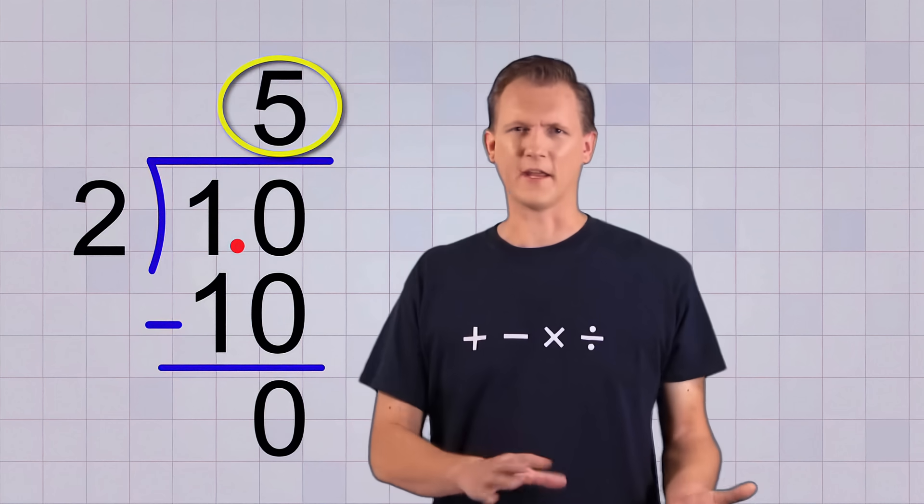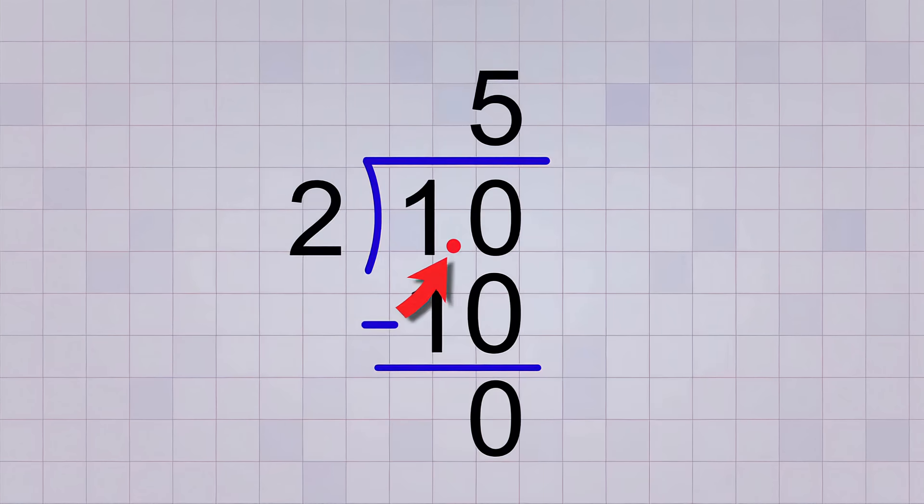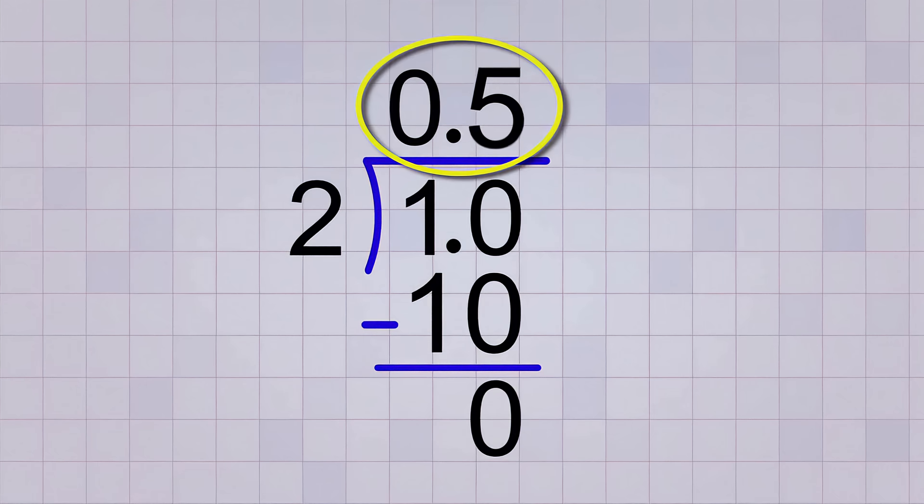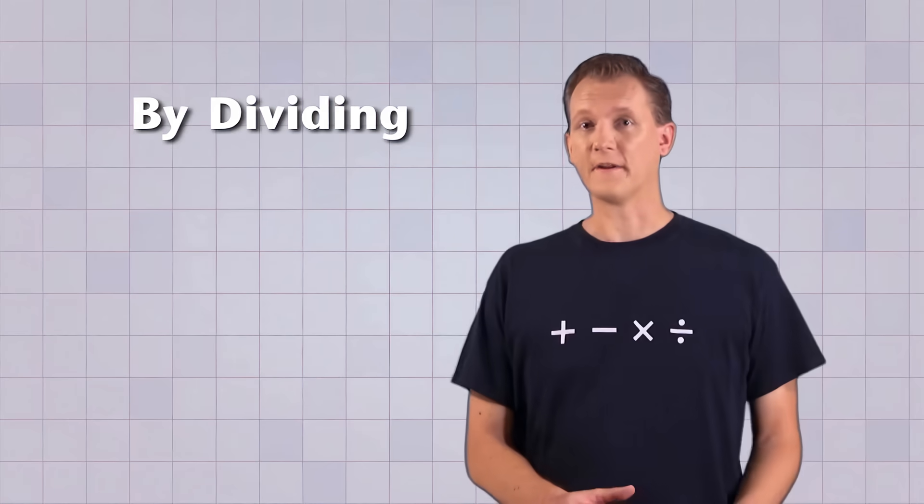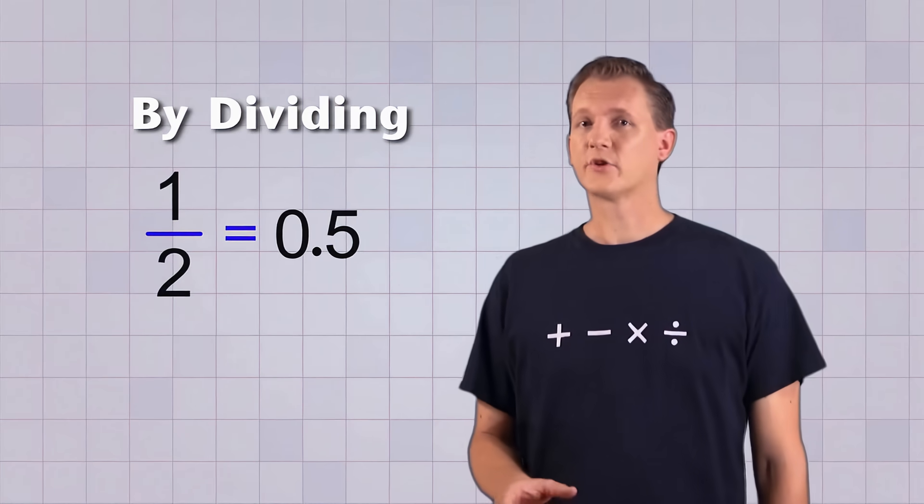And we know that 5 can't be the answer because 5 is bigger than 1 half. We just need to include the decimal point in our answer for it to be correct. We put it directly above the decimal point in our problem. There. Now our answer is 0.5 or 0.5 which is the more proper way to write it. So by dividing, we figured out that the decimal value of 1 half is 0.5.